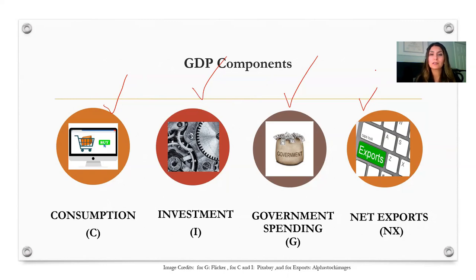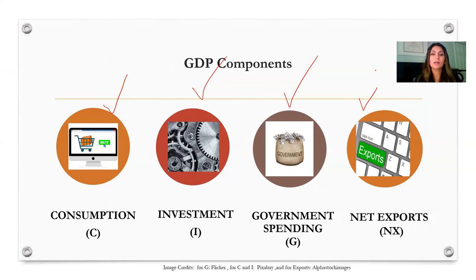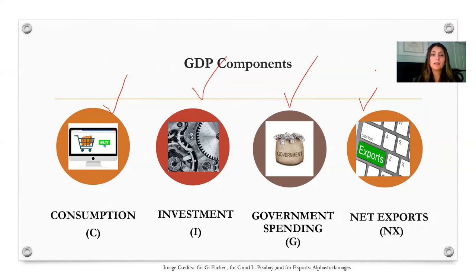Government spending includes teacher salaries, infrastructure spending, and defense spending. To calculate net exports for GDP, economists add all the goods and services exported to other countries and subtract all the goods and services imported from other countries. In the United States, net exports are in general negative since the U.S. imports more than it exports.